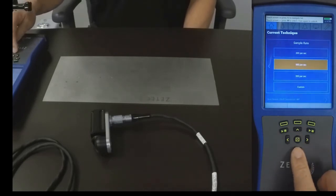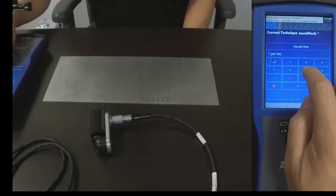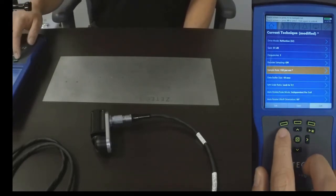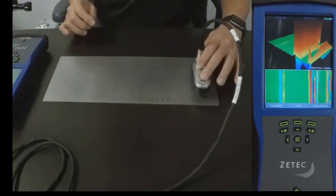We will set the sample rate to 150 samples per second for the first scan. Acquisition can be started by selecting the Acquire button. Let's perform a hardware balance then scan the plate.